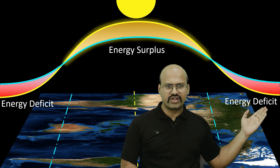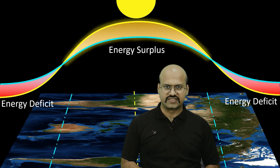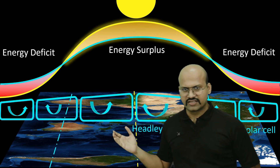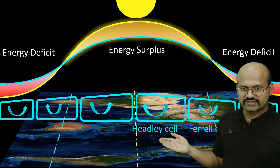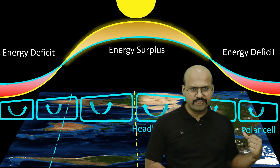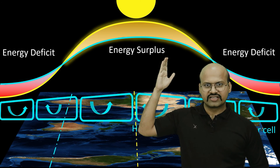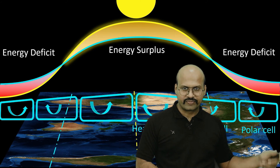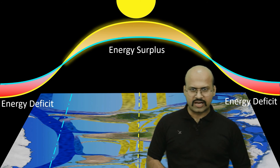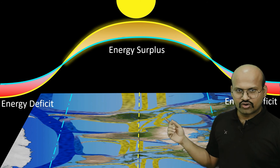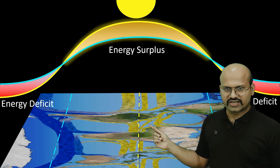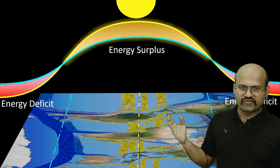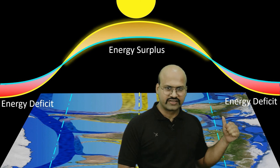At the equator there is an energy surplus and in the polar region there is an energy deficit. We have earlier seen that there are circular air patterns — the Hadley cell, Ferrel cell, and Polar cell — which help in distributing the surplus energy from the equatorial region toward the polar region. Ocean currents also help in this process. The equatorial ocean currents carry heat from the equatorial region, and slowly, with the help of other streams and ocean currents, this heat is brought toward the polar region.